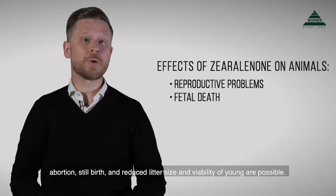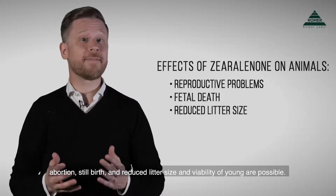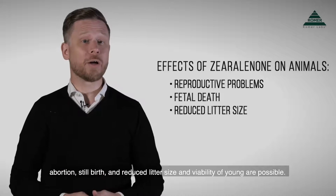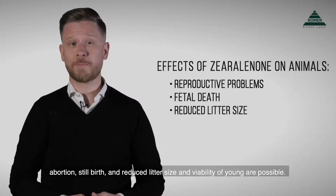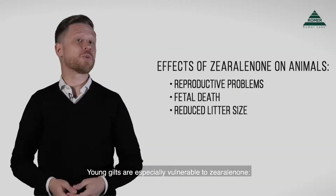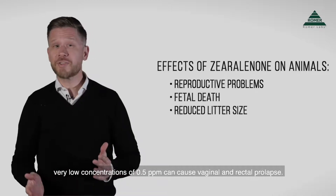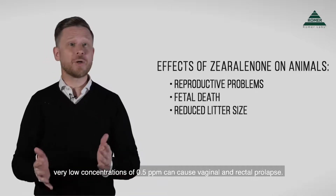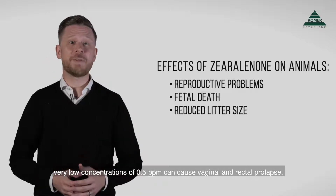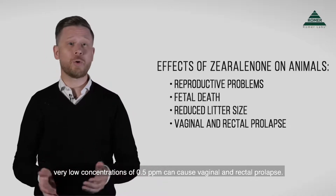Abortion, stillbirth, and reduced litter size and viability of young are possible. Young gilts are especially vulnerable to zearalenone — very low concentrations of 0.5 ppm can cause vaginal and rectal prolapse.